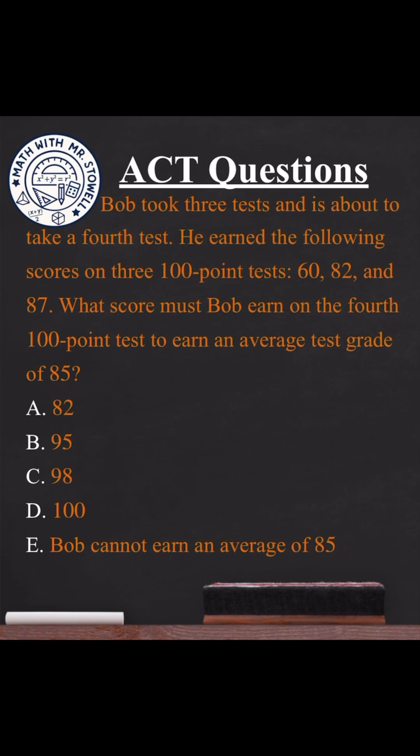Bob took three tests and is about to take a fourth one. He earns the following scores on three 100-point tests: 60, 82, and 87. What score must Bob earn on the fourth 100-point test to earn an average grade of 85 points?